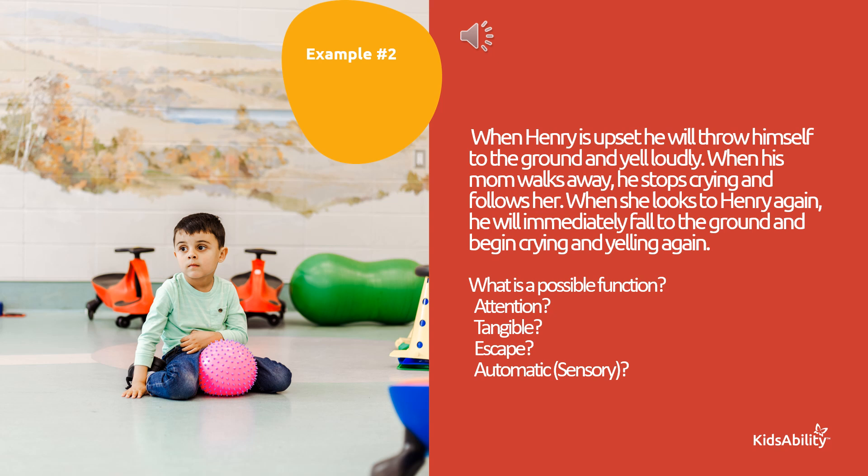In the second example, when Henry is upset, he will throw himself to the ground and yell loudly. When his mom walks away, he stops crying and follows her. When she looks at Henry again, he will immediately fall to the ground and begin crying and yelling again. The function is likely attention, as he is only flopping to the ground, yelling and crying when an adult is present and looking at him.